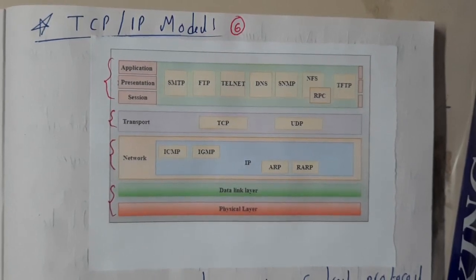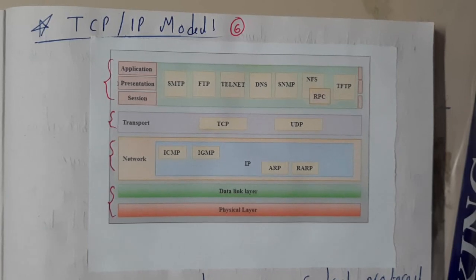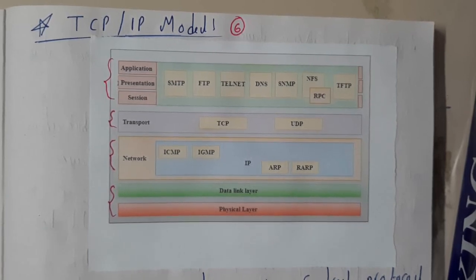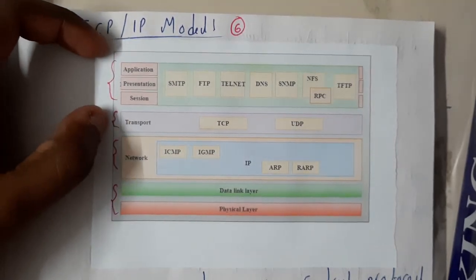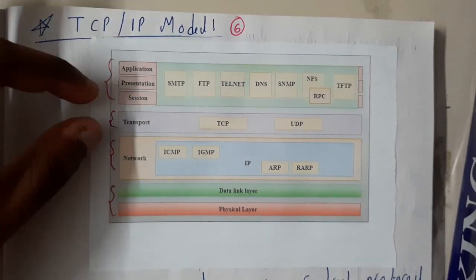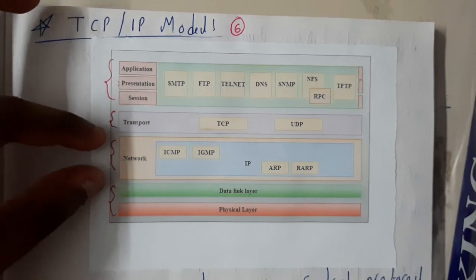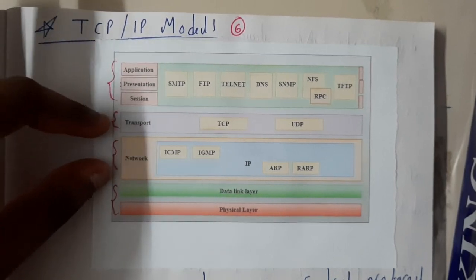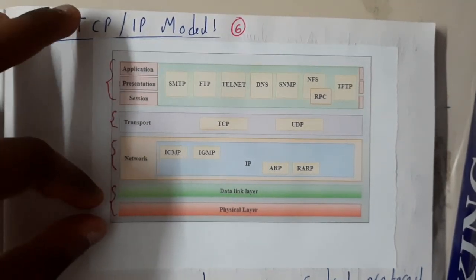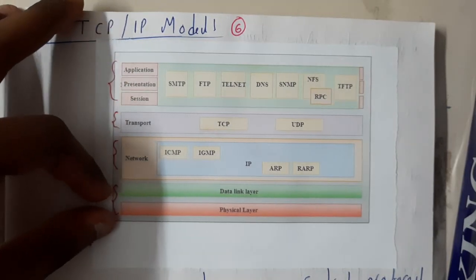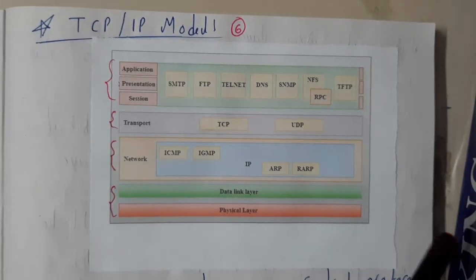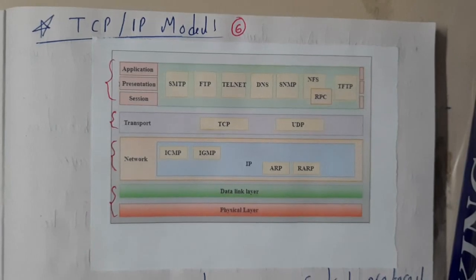In our previous lecture, we gave some basic explanation of protocols. Now we'll discuss what different protocols each layer contains. The four layers are: application layer, transport layer, internet layer, and network access layer.